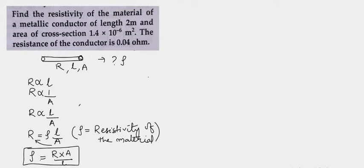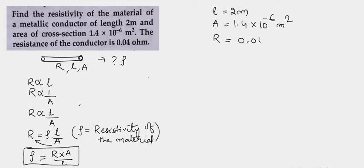So let's write down what is given here. The length of the conductor is 2 meter. The area of cross section is 1.4 into 10 to the power minus 6 meter square, and the resistance R is given as 0.04 ohm.